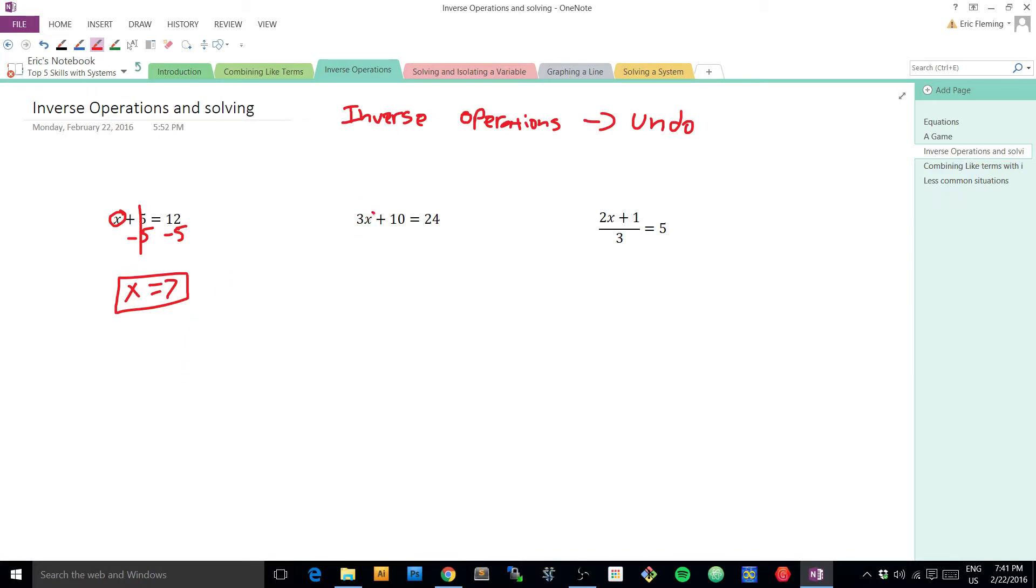Here in this question, it's a little bit trickier because there's actually two things happening to x. We have a times 3, and we also have a plus 10. So now we have to make a decision about what to undo first. And this is where the layers come in. That this times 3 is a much inner layer than this plus 10 is. So we're going to want to undo this plus 10 before we try to undo this times 3.